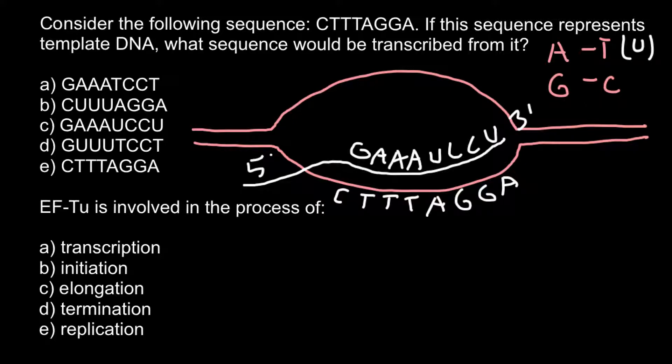We can cross out the first variant because this is the sequence of the coding strand of the DNA. The coding strand should have the same sequence as messenger RNA with the only exception that instead of uracil we would have thymine. So the first sequence we can cross out. We can cross out the second sequence. Our choice would be sequence C.